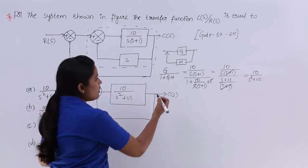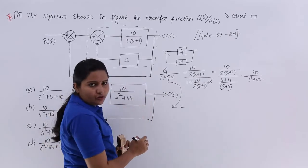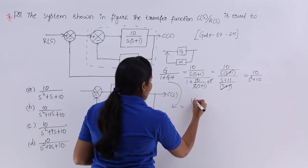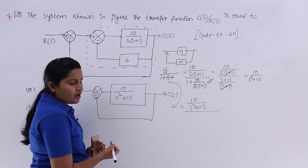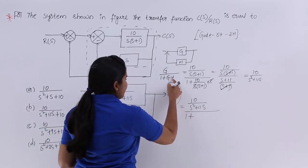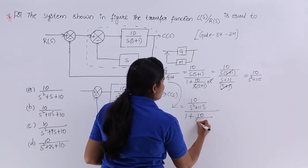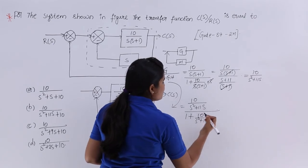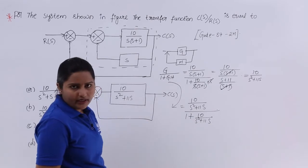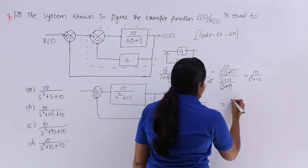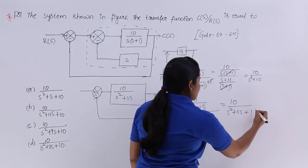Substituting into the same formula for the outer loop: G is 10/(S²+11S) and H is 1 because this is unity feedback. Applying G/(1+G·H): we get [10/(S²+11S)] divided by [1 + 10/(S²+11S)]. After cross multiplication and simplification, the result is 10 divided by S² plus 11S plus 10.